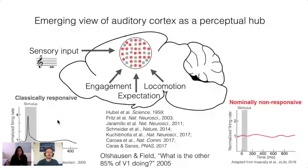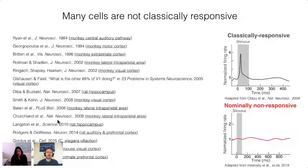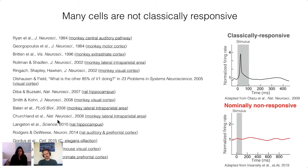These normally non-responsive cells are not limited to rodent auditory cortex but can be found in diverse brain regions including visual cortex, motor cortex, somatosensory cortex, parietal cortex, and subcortical areas like the hippocampus, as well as in other species including C. elegans and monkeys — spanning the phylogenetic tree.